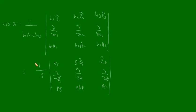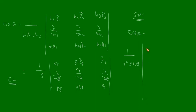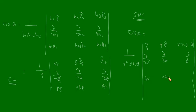The curl in spherical polar coordinate system is: del cross A equals (1/(r² sin θ)) times the determinant with unit vectors r cap, r theta cap, r sin theta phi cap in the first row; ∂/∂r, ∂/∂θ, ∂/∂φ in the second row; and h1·A_r, h2·A_theta, h3·A_phi — that is A_r, r·A_theta, r sin theta·A_phi — in the third row.